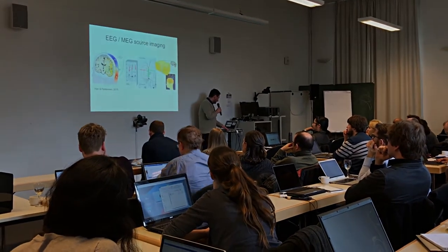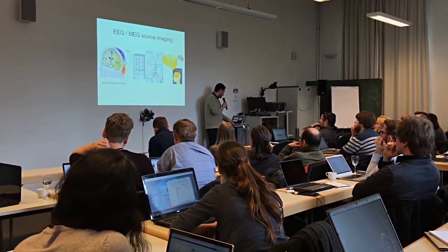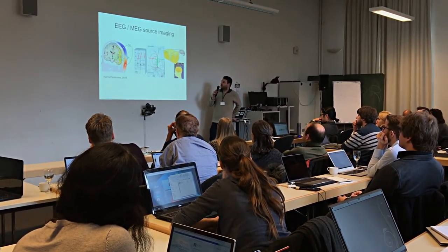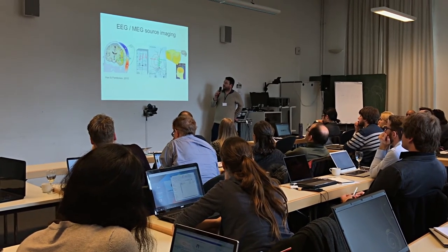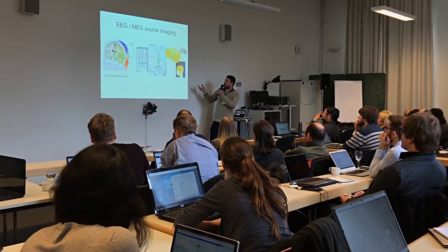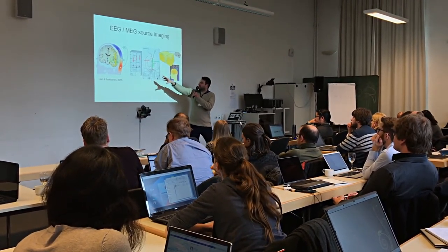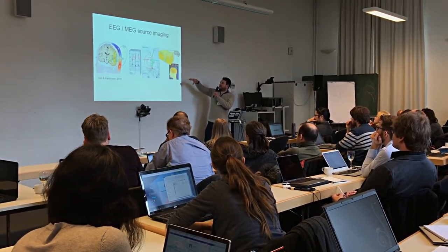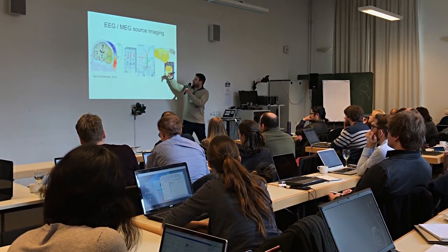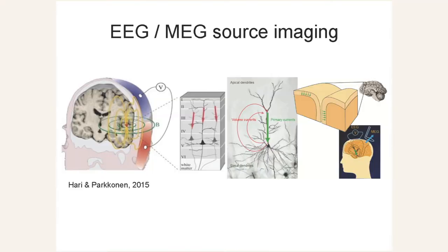Brainstorm is a very nice software — even if you don't do source imaging, you can use it for all kinds of pre- or post-processing. The basic process: import anatomy and sensor locations, make sure they are registered, import time series data, perform source estimation, and perform analysis in source space. This is very straightforward. After FreeSurfer you can directly import the FreeSurfer result; Brainstorm automates most of this.